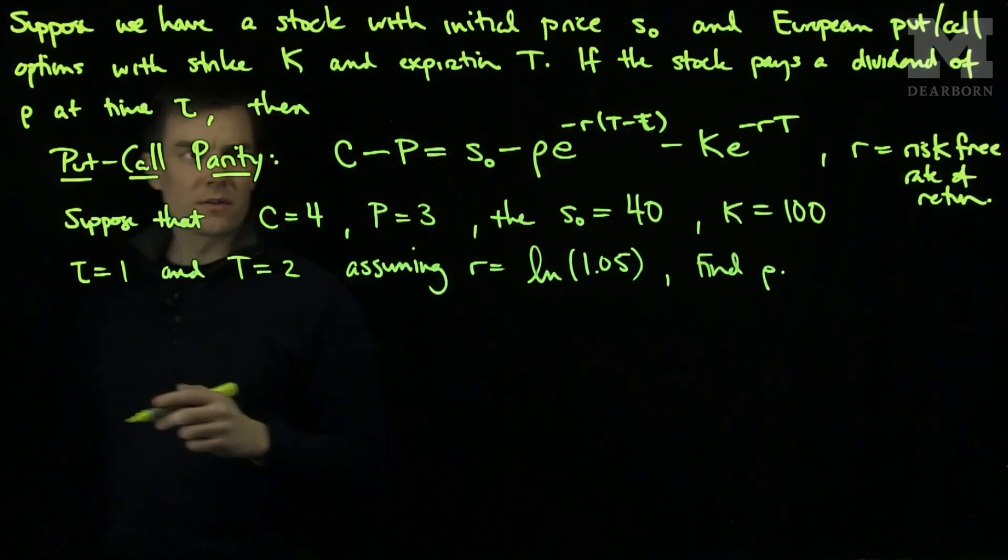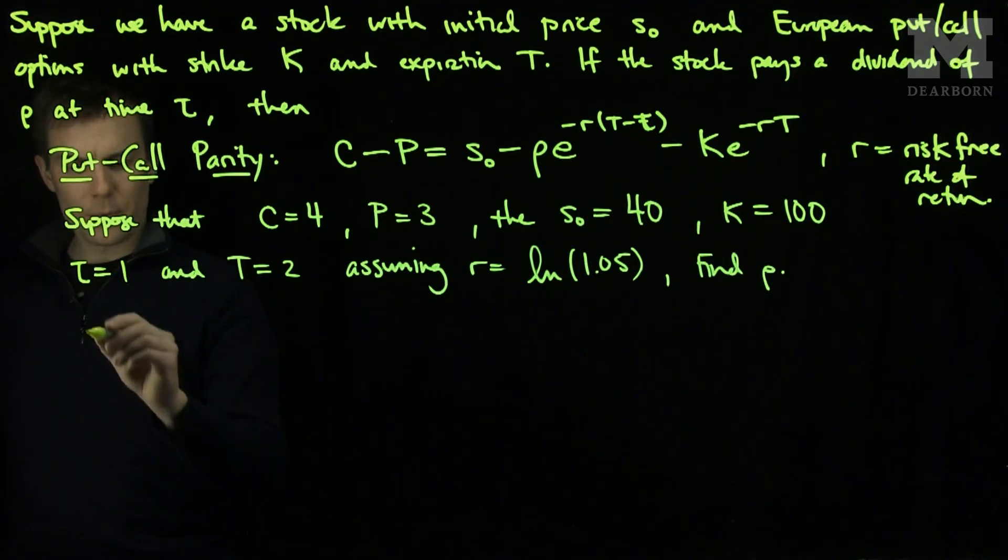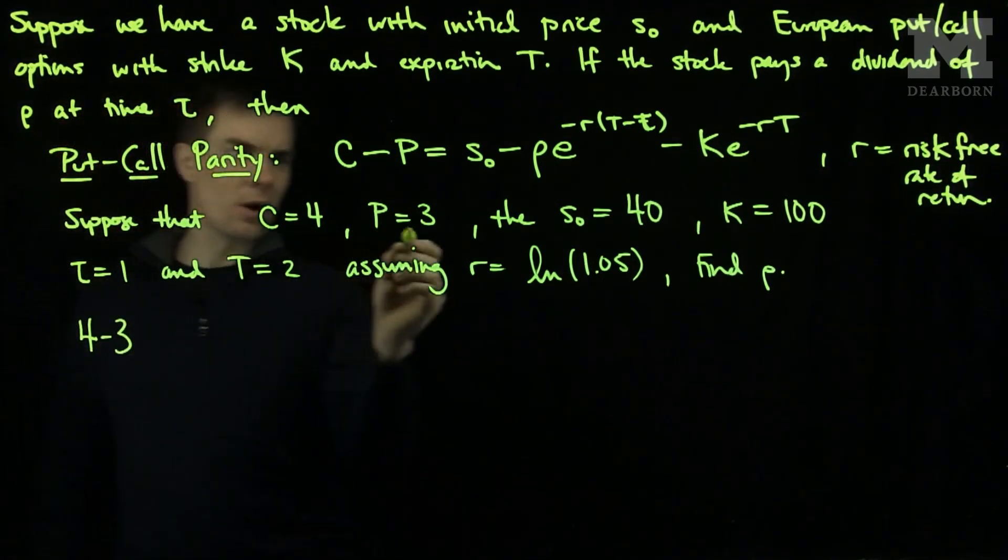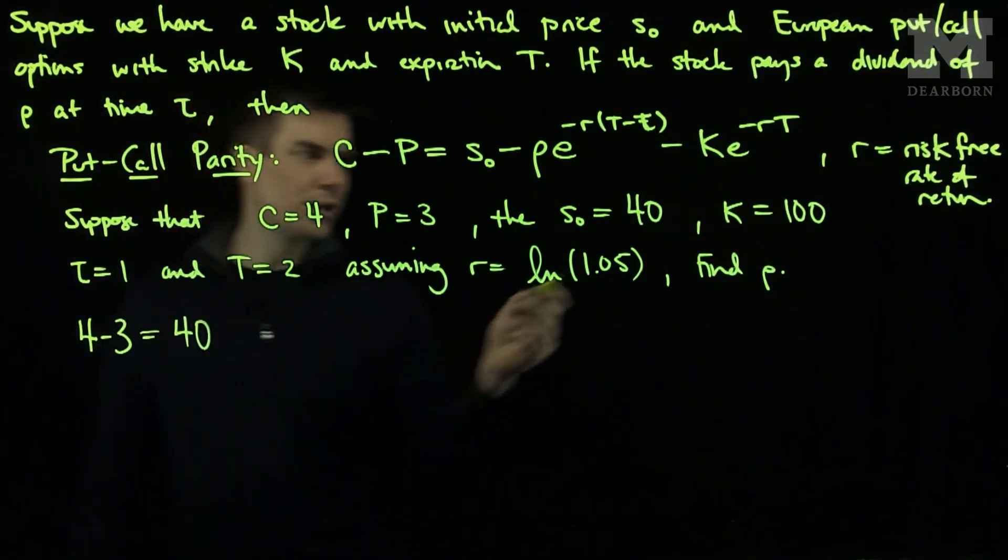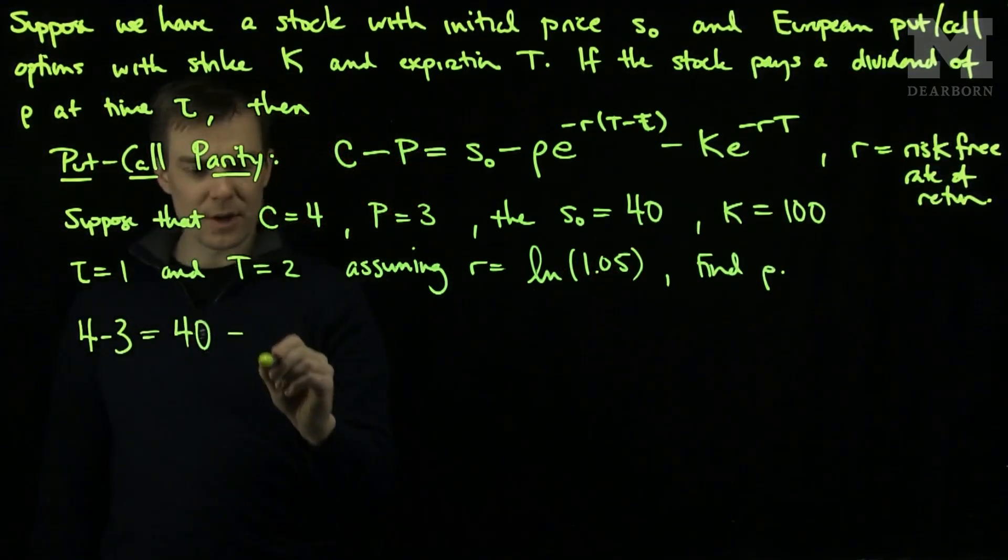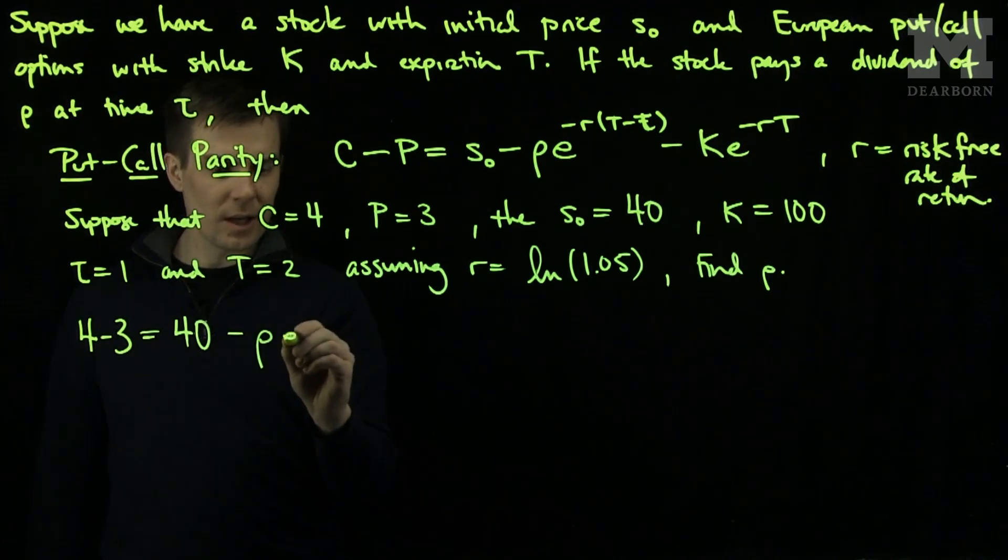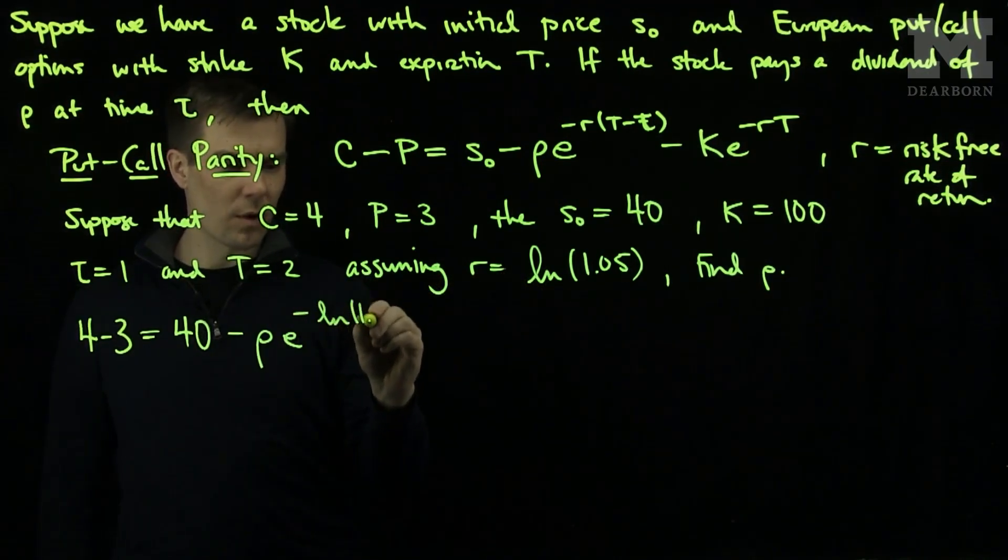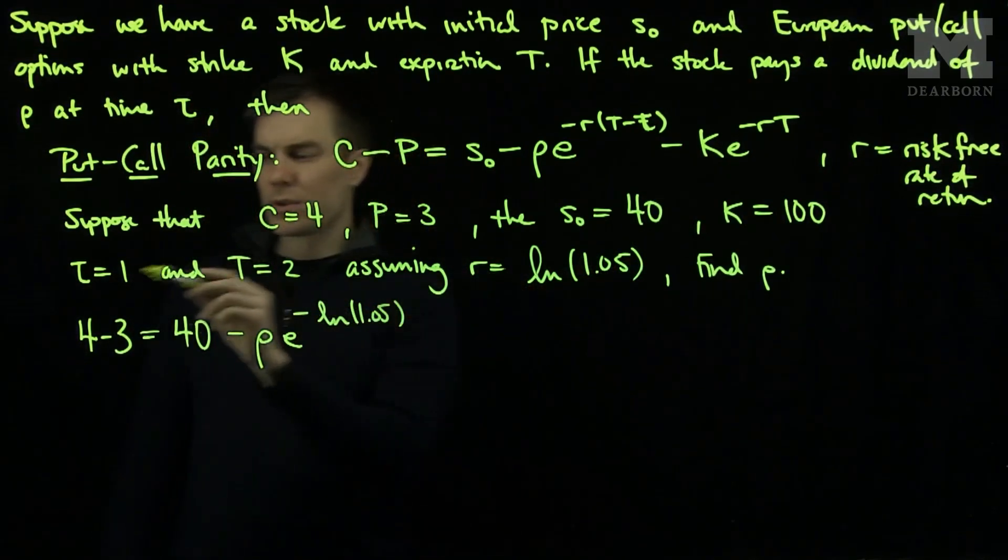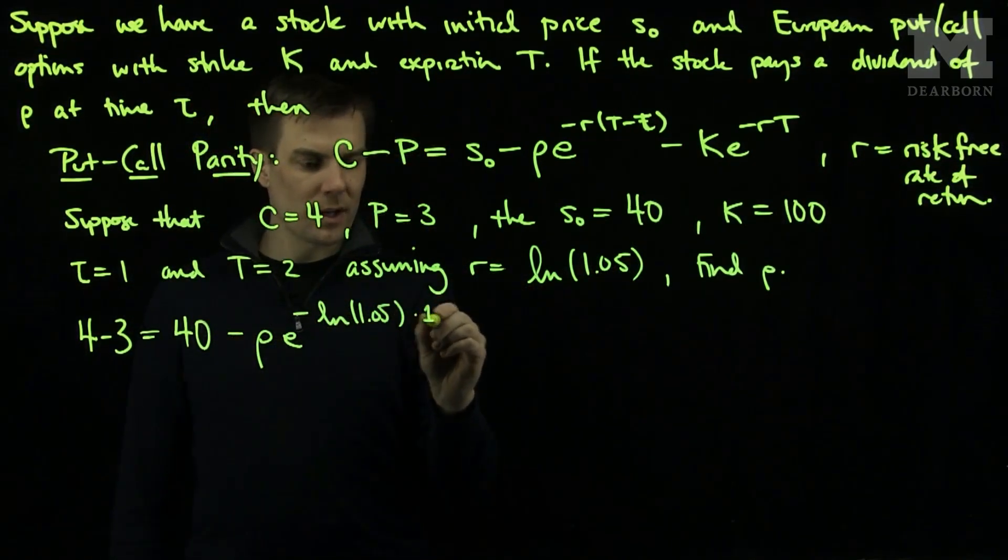Once we have all this information, we can simply plug it into the formula. We have 4 minus 3, that's the call minus the put, equals the initial stock price, which is 40, minus the unknown dividend rho, times e to the minus the rate given by log of 1.05. Since t was 2 and tau was 1, I have a 1 here.